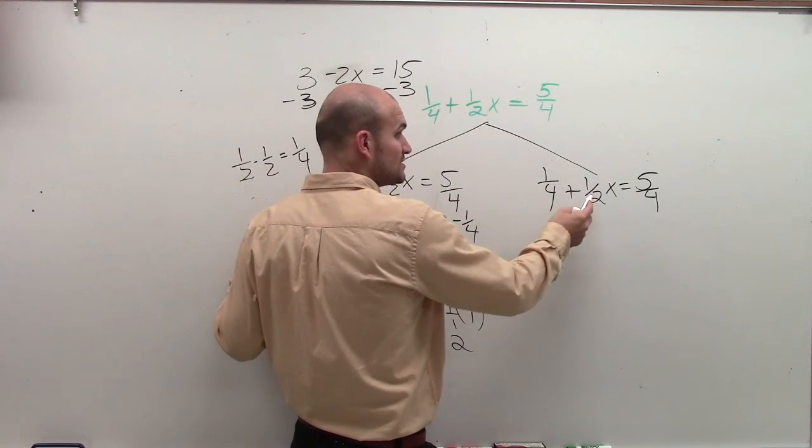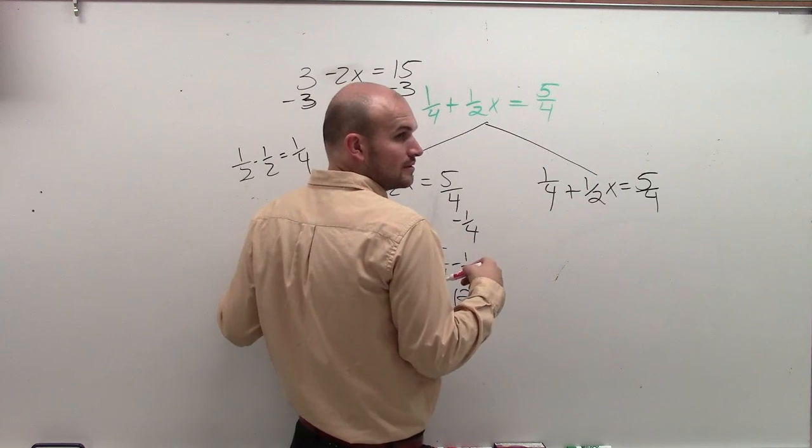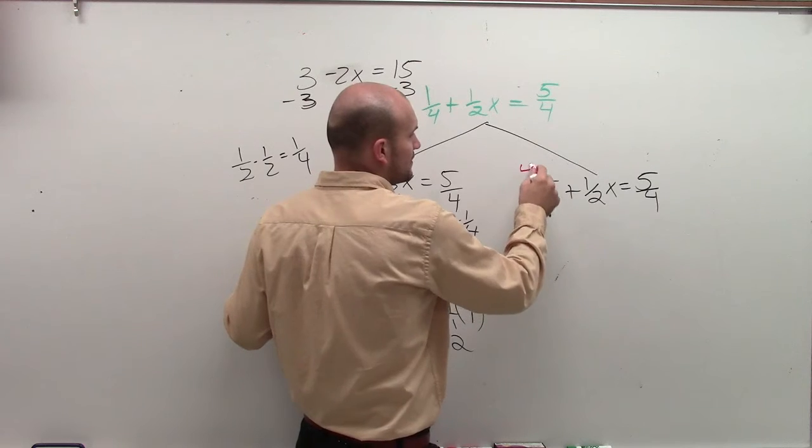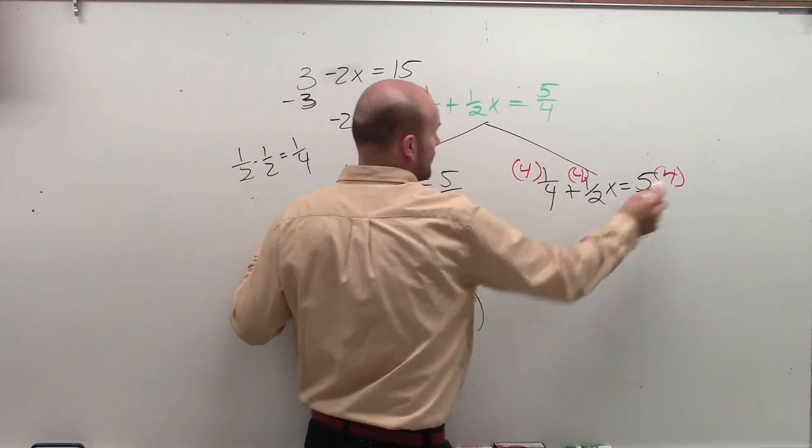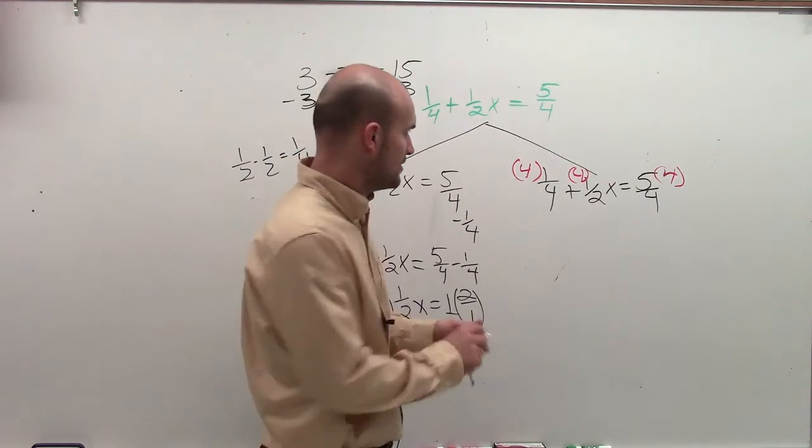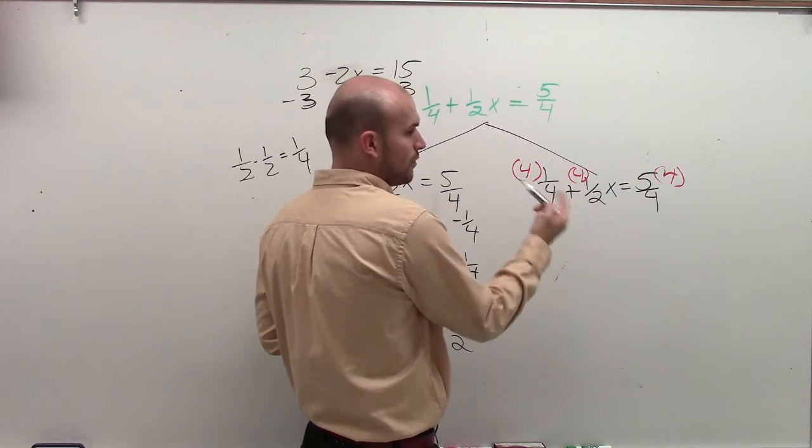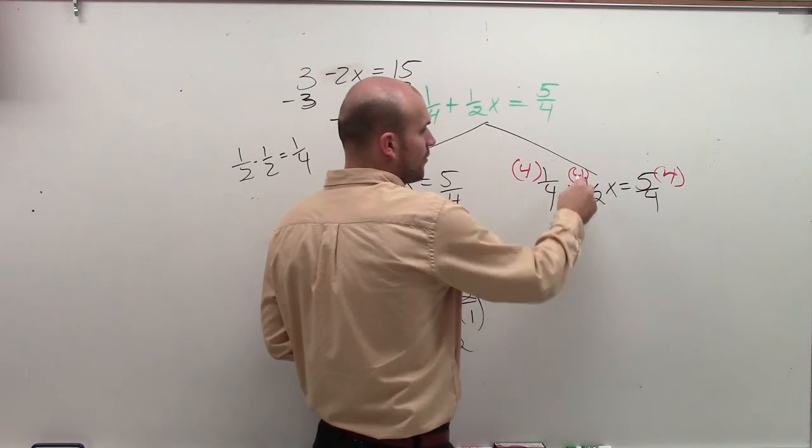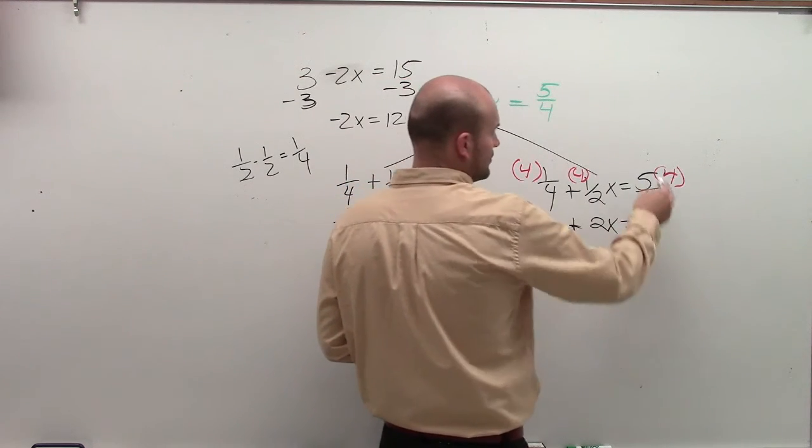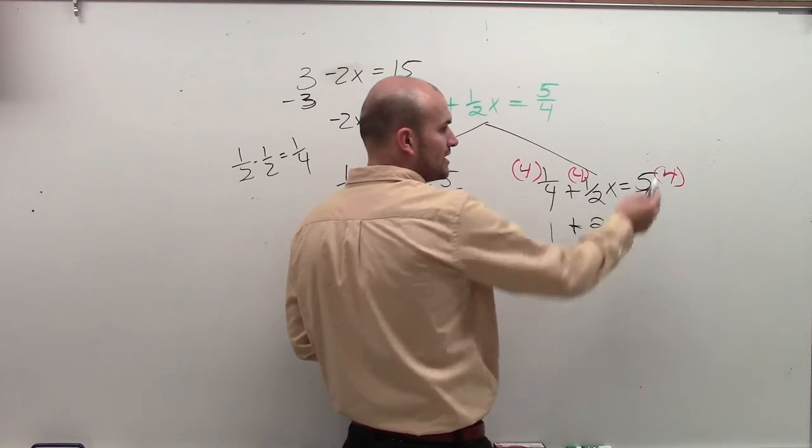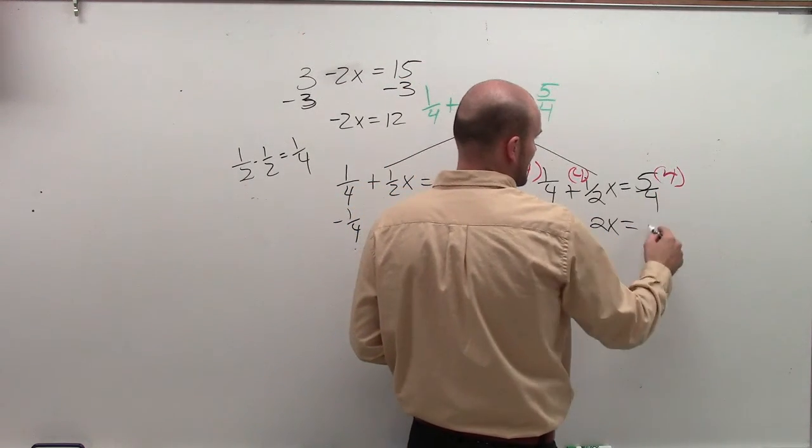Well, 2 divides into 4 and 2. But what's the smallest number that 4 and 2 divide into? 4, exactly. So you multiply every term times 4. 4 times 1 divided by 4 is 1. Or you can look at it, 4 divided by 4 is 1, 1 times 1 is 1. Plus, 4 times 1/2, 1/2 of 4 is 2x, equals, and then here, 5 times 4 is 20, 20 divided by 4 is 5. Or you could say 4 divided by 4 is 1, 1 times 5 is 5.